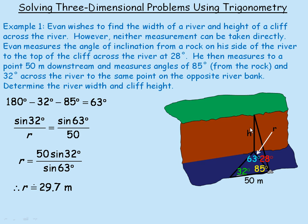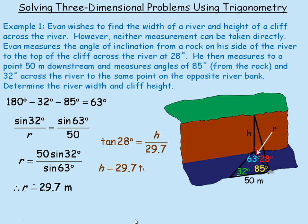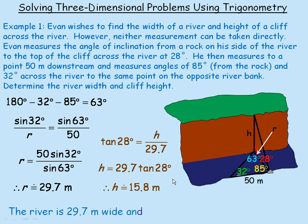In the vertical triangle there is a right angle, so we can use right angle trigonometry to find the height of the cliff. The height h is opposite the 28° angle, and r = 29.7 meters is the adjacent side. Opposite over adjacent gives the tangent ratio: tan 28° = h / 29.7, so h = 29.7 × tan 28° ≈ 15.8 meters. The river is 29.7 meters wide and the cliff is 15.8 meters high.